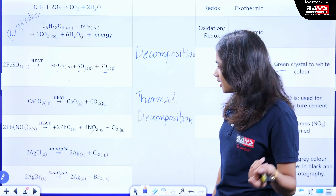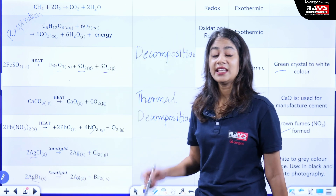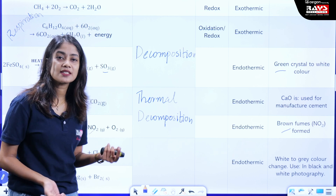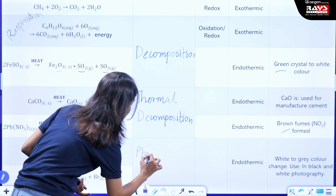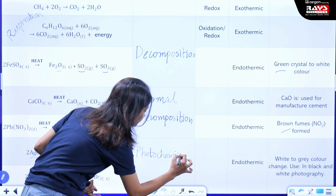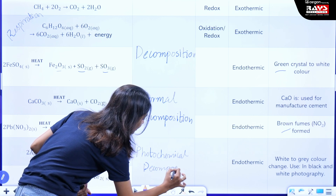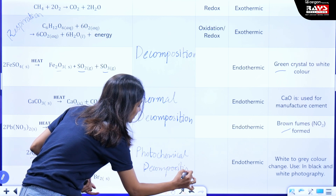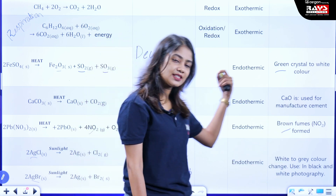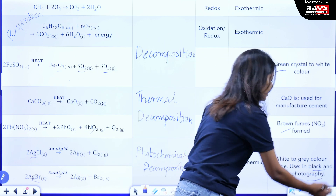The next two reactions: silver chloride and silver bromide decompose in the presence of light. Decomposition in the presence of light is known as photochemical decomposition. The peculiarity of this reaction is that the colour changes — the reactant colour is white and it changes to grey — which is applied in black and white photography. This is important; note it down.